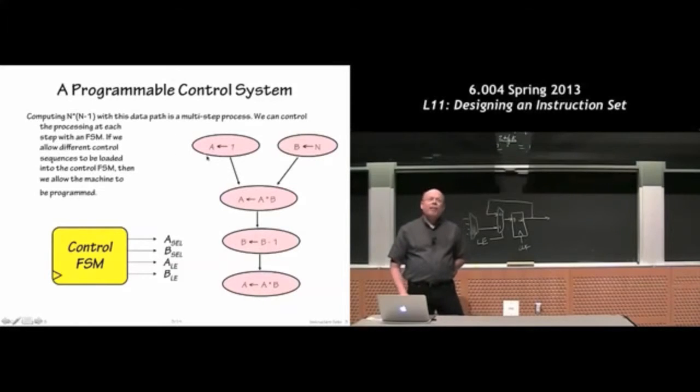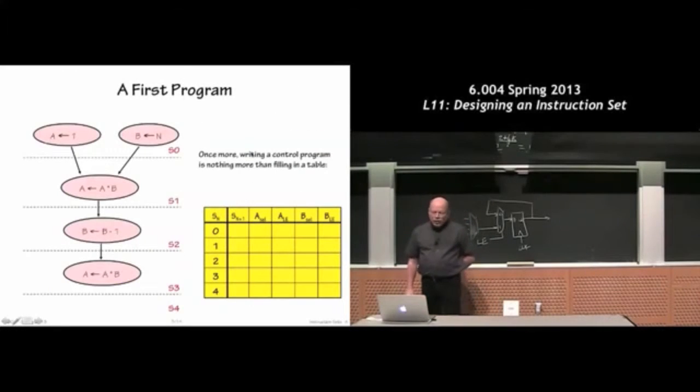So that's the sequence of operations. Each of these circles represent something we want to do. The arrows represent a sequence. And if there's no arrow between two operations, they can happen in any order or perhaps together. So we know how to build a finite state machine to control such a thing. We're going to have a sequence of states that represents the sequence of operations we want to perform. And we'll arrange for the output signals to be what we need them to be to do what needs to be done.